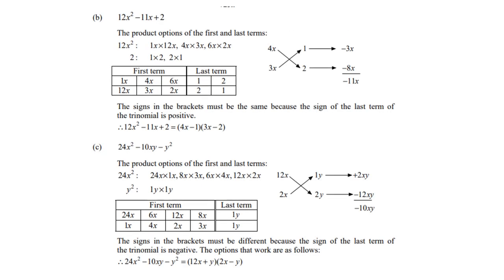Let's look at the second example. 12x squared minus 11x plus 2. So, the product options of the first and last terms. 12x squared can be 1x times 12x, 4x times 3x, 6x times 2x. And of course, 2 is 1 times 2, or 2 times 1.